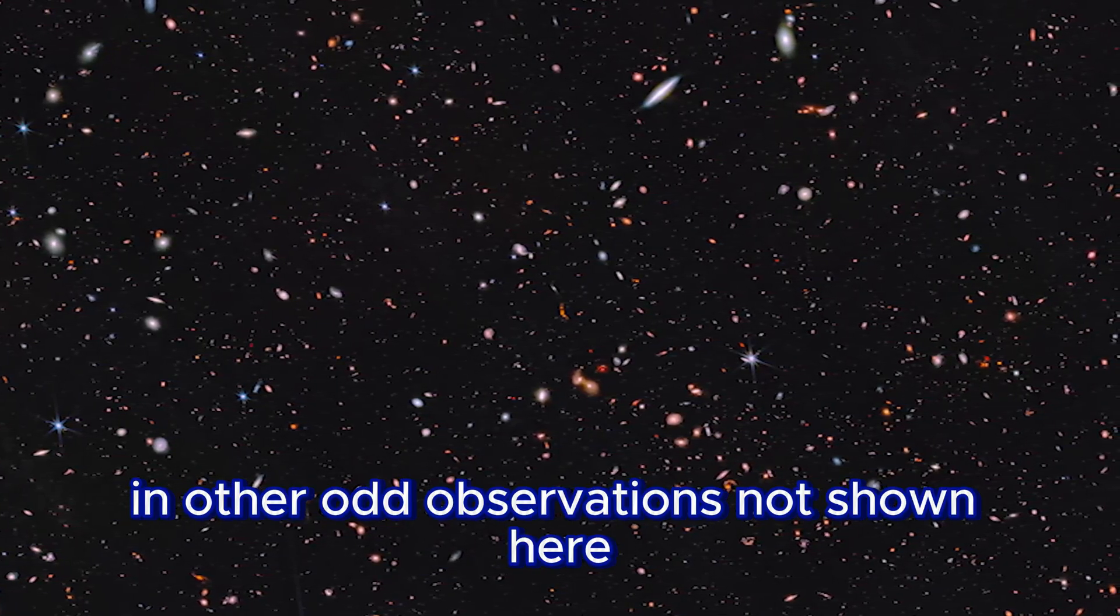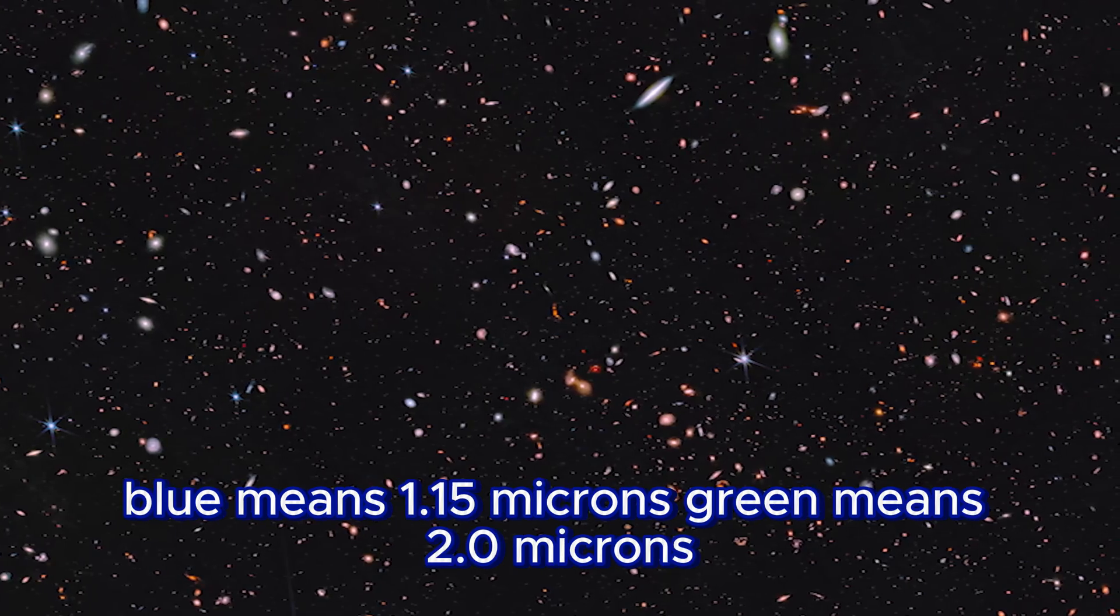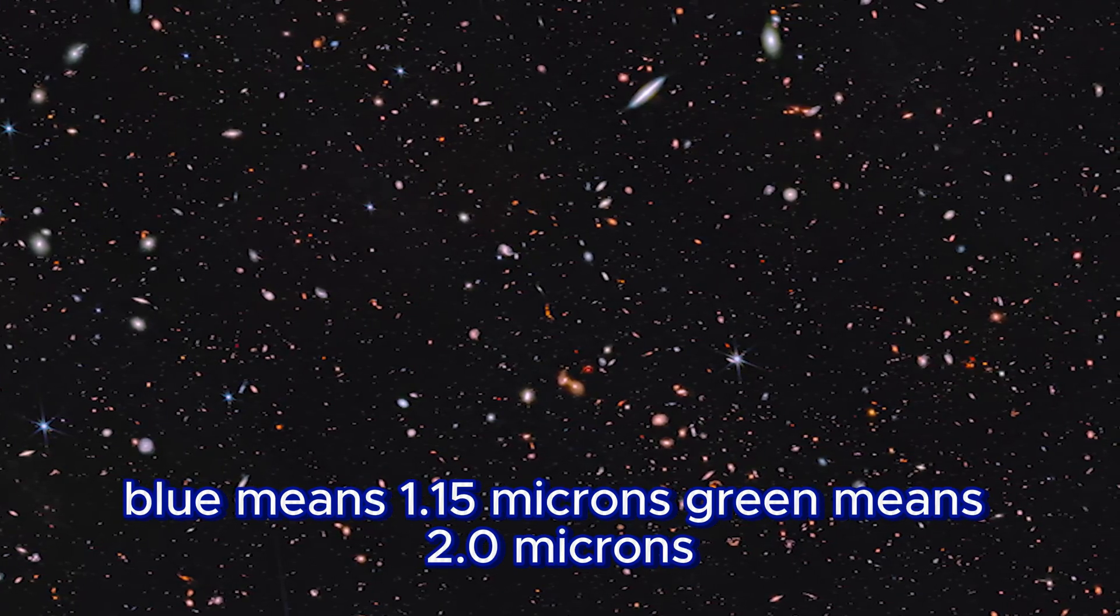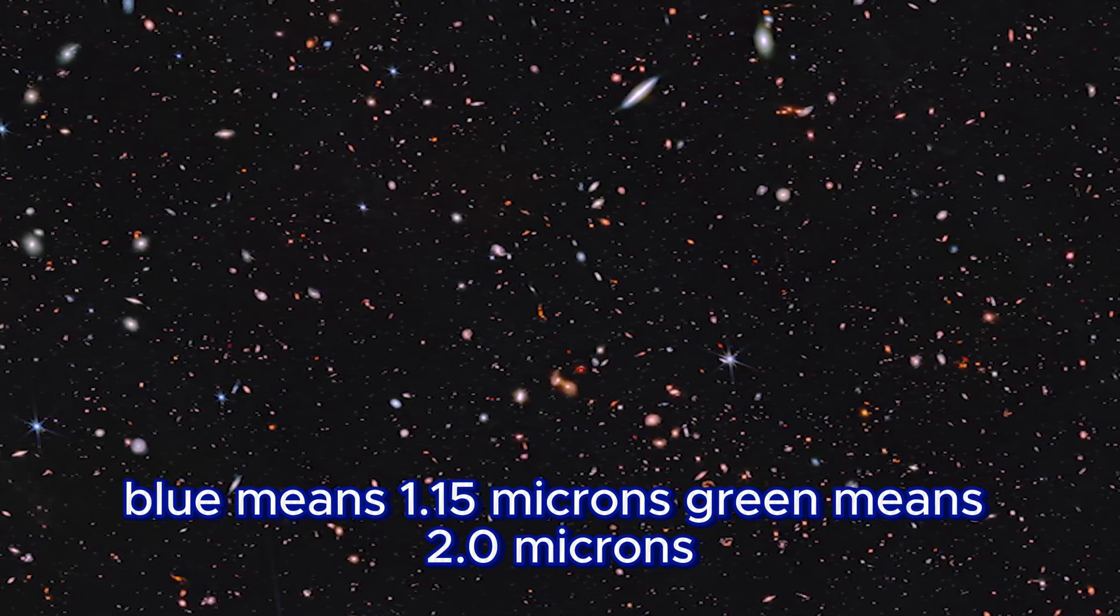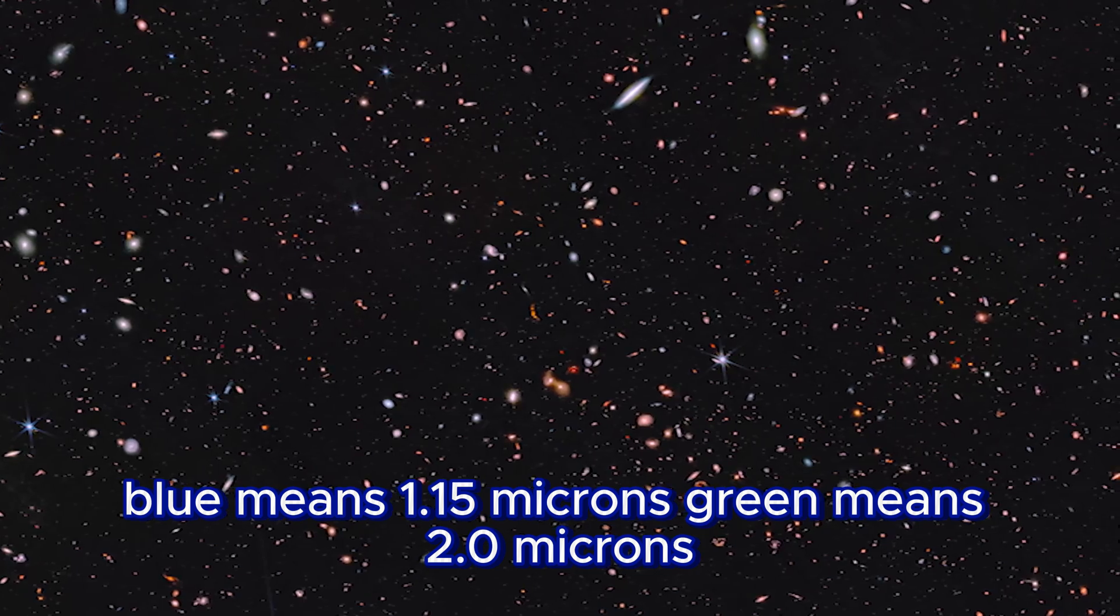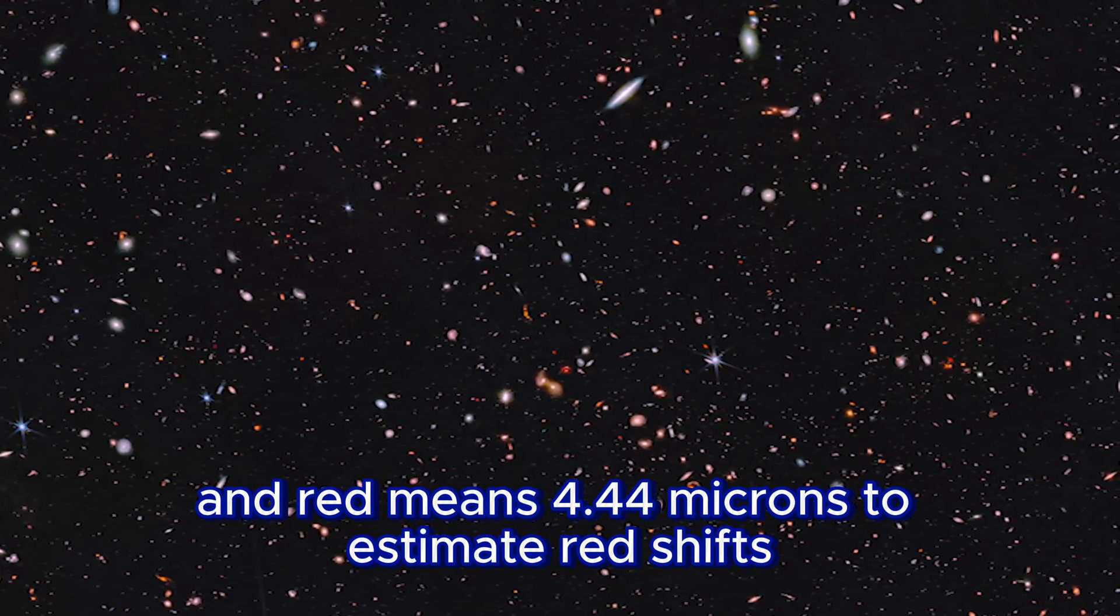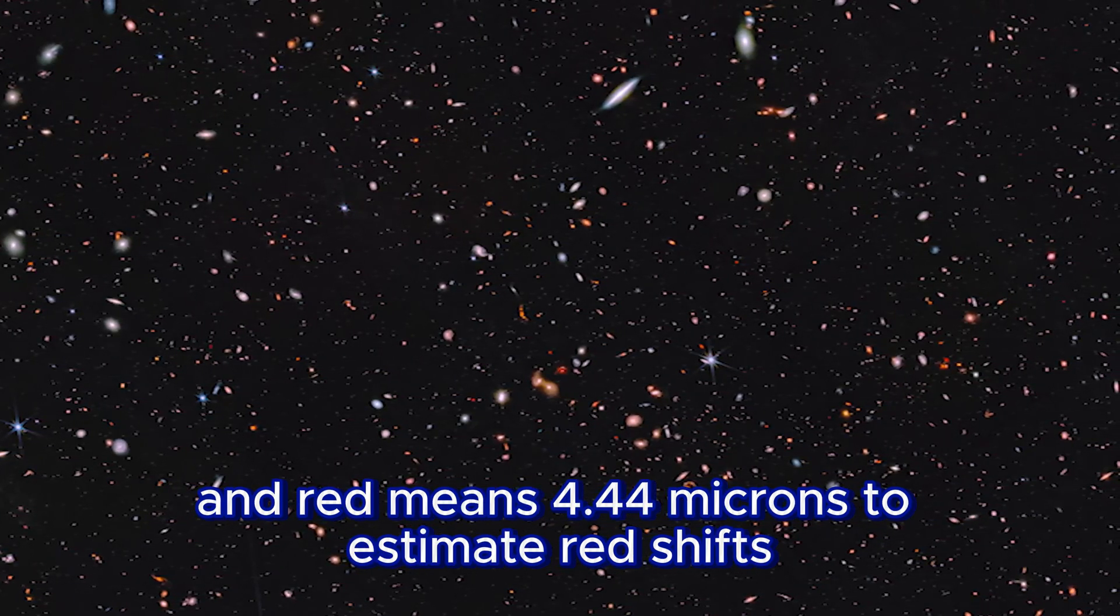In other observations not shown here, blue means 1.15 microns, green means 2.0 microns, and red means 4.44 microns to estimate red shifts.